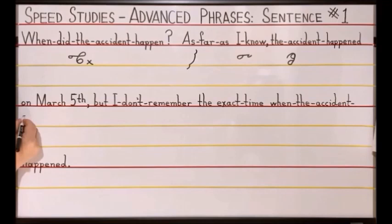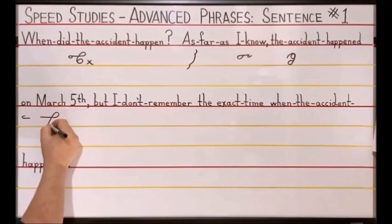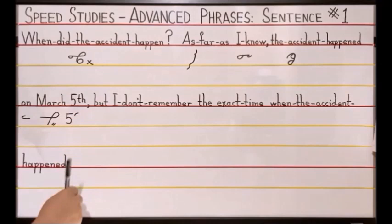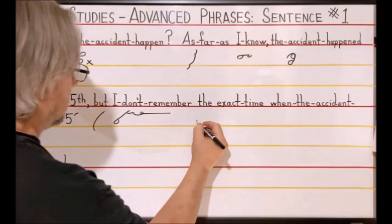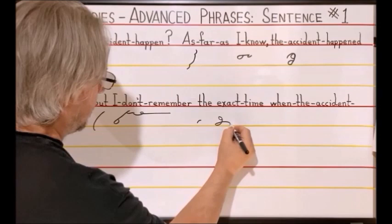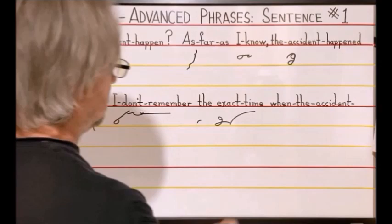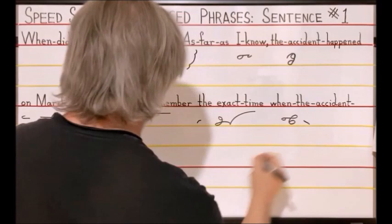On — O-N — March 5th: M-A-C-H with the ticks for capitalization, the number 5 and T-H above the line. But — B — I don't remember: A-D-O-N-R-E-M-E-N-stroke, the exact time: E-S-A-K-T-E-M-stroke, when the accident happened: E-N-A-S-A, period.